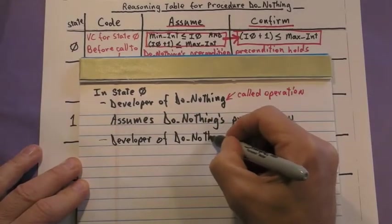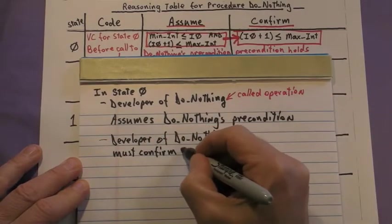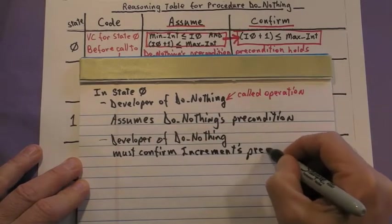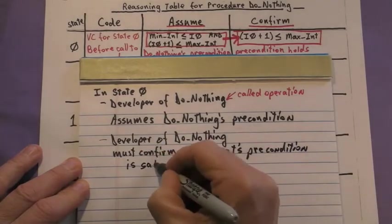Additionally, design by contract requires the developer to confirm that increment's precondition is satisfied. That's because do nothing is now the caller.